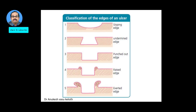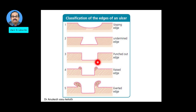This is how it looks: you can have a sloping edge here. This is the undermined edge where the subcutaneous tissue is eaten out by the ulcer much faster than the skin. Here you have the straight 90-degree punched out edge. This is a raised edge, and this is a raised and everted rolled out edge.